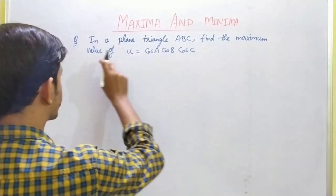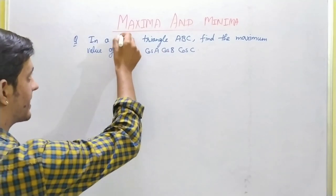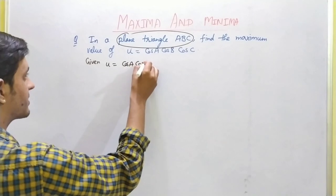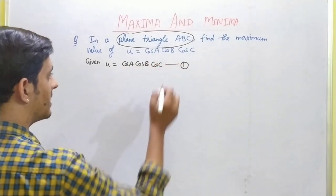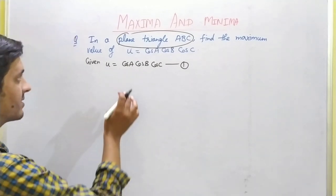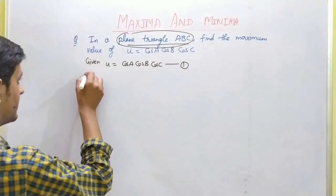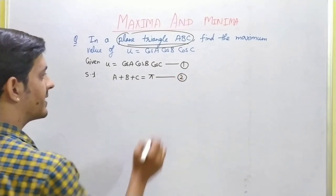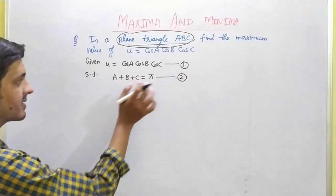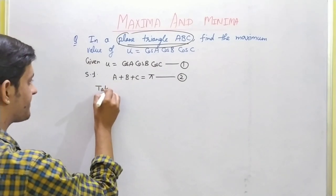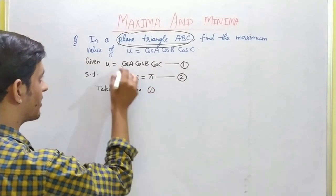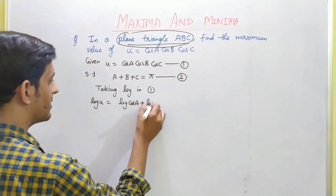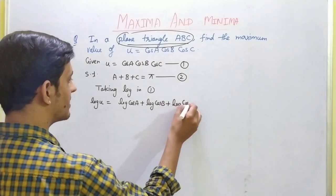Next numerical: In a plane triangle ABC, find the maximum value of u = cos A · cos B · cos C. The triangle condition gives us: subject to the condition A + B + C = π (since the sum of all angles of a triangle is 180° = π). Taking log of equation 1: log u = log cos A + log cos B + log cos C.